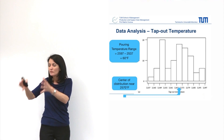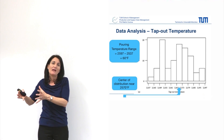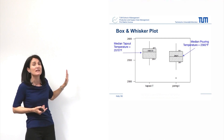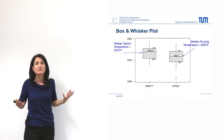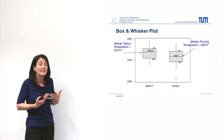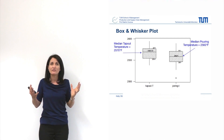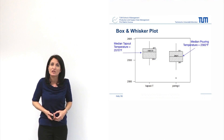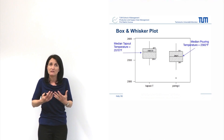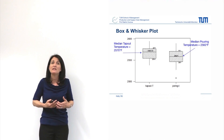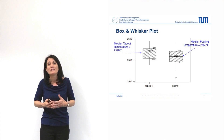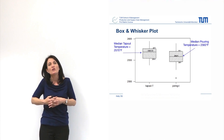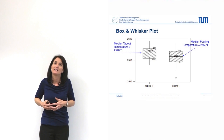Now you have to think about how to bring your pouring temperature down 10 degrees and how to reduce the variability. Looking at the box and whisker plot, we have all that information in a very compact, concise way. For the tap-out temperature, we have a median temperature of 2,570, and for the pouring temperature, we're at 2,560. That's not our target — that's too high. You can also see that the spread of the data increased slightly at the pouring temperature.